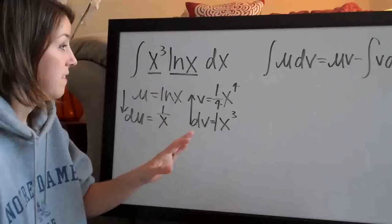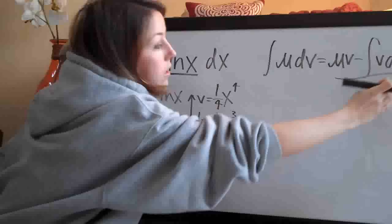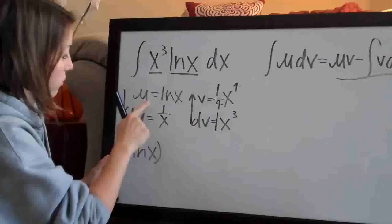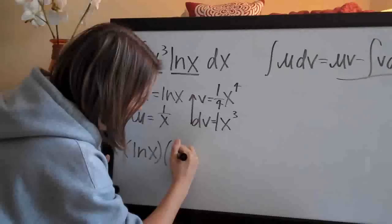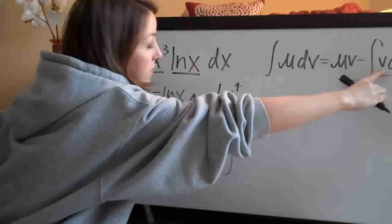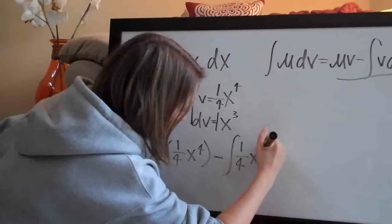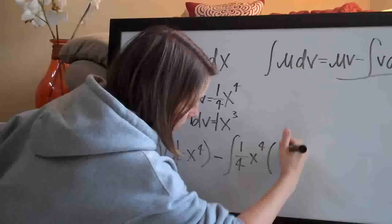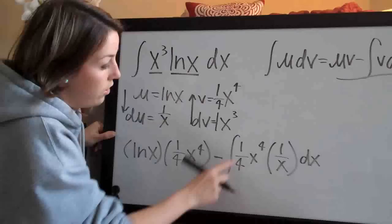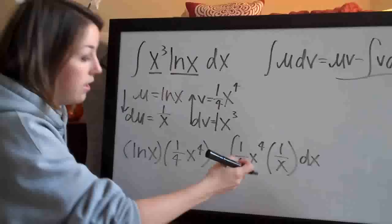Now we plug these into the formula. We write u first — ln of x — then v, which is one-fourth x to the fourth. Then minus the integral of v times du: that's one-fourth x to the fourth times 1 over x, dx. We always include dx with the integral sign as notation indicating we're taking the antiderivative. So we've plugged all components into the formula.